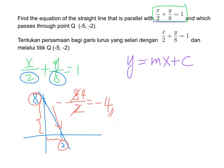So here the gradient is negative 4, and we are going to use this into here. So we have y = -4x + c. The next step is to find c. We are going to make use of point Q to find c.